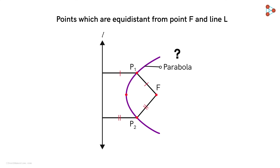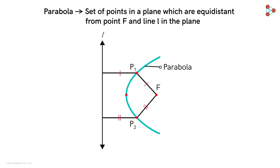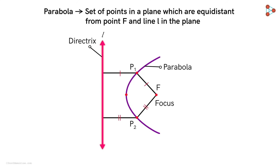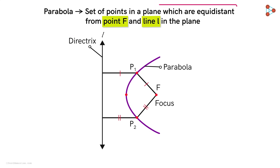So how can we define a parabola? A parabola is the set of all points in a plane that are equidistant from a fixed point F and a fixed line L. They are given special names: the point F is called the focus of the parabola, and line L is called its directrix. Notice that the shape and position of the parabola will depend on the position of point F and line L — depending on the point we take as our focus and the line we take as the directrix, we will get different parabolas.